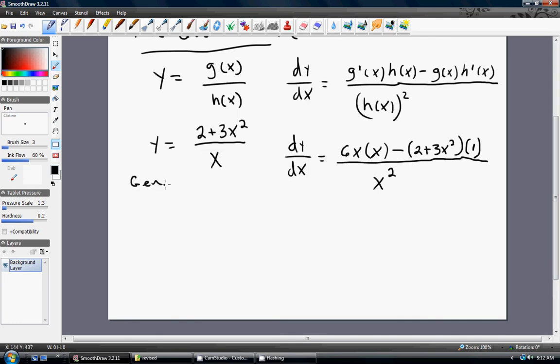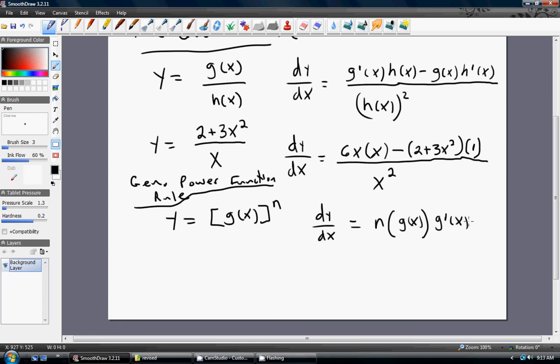We've got the generalized power function rule. And with the generalized power function rule, I'm going to write it in the basic format like this. So, some function here, g of x, is raised to the power of n. The derivative of this will look like the following. And we need to subtract 1, like the regular power function rule, from the exponent up here.